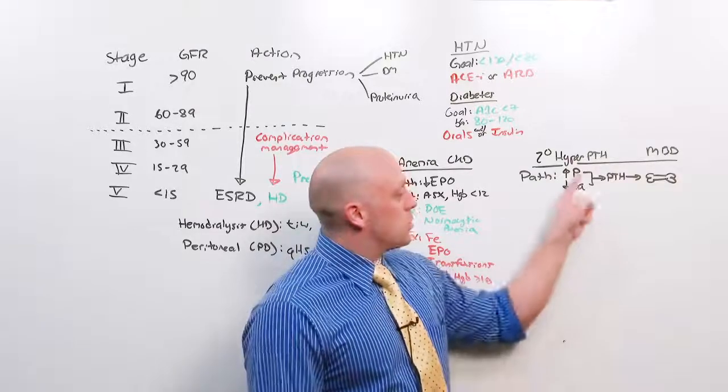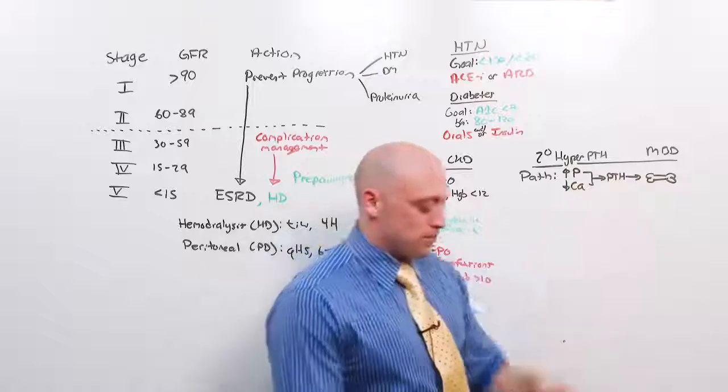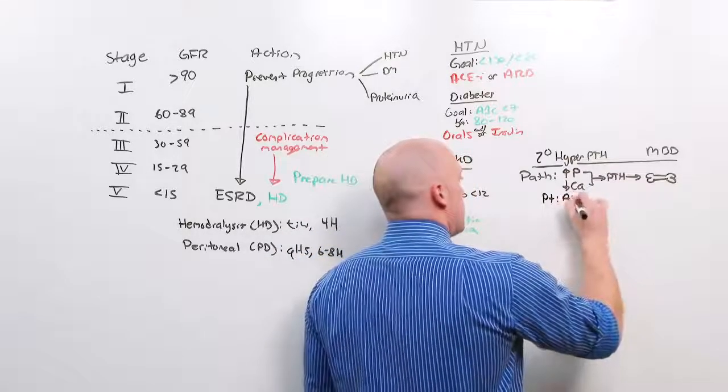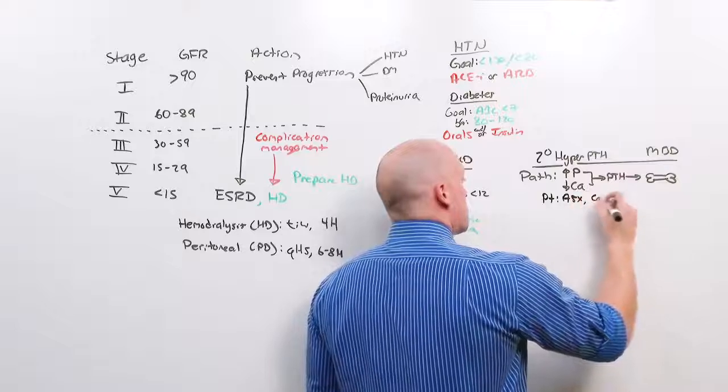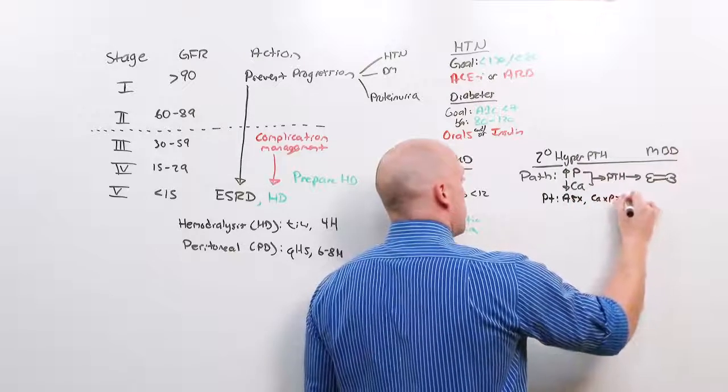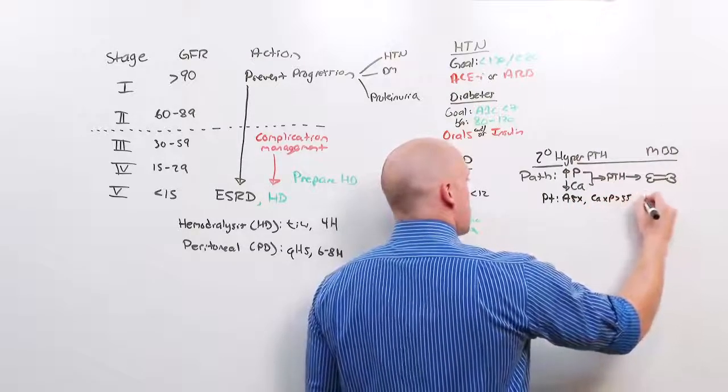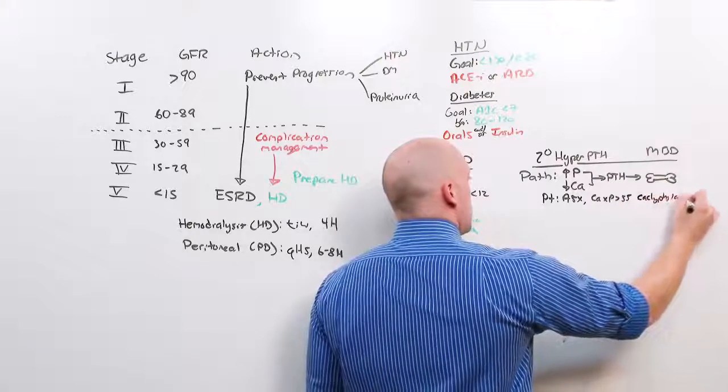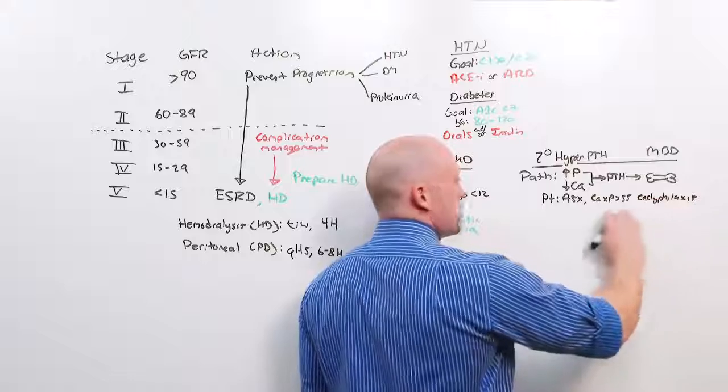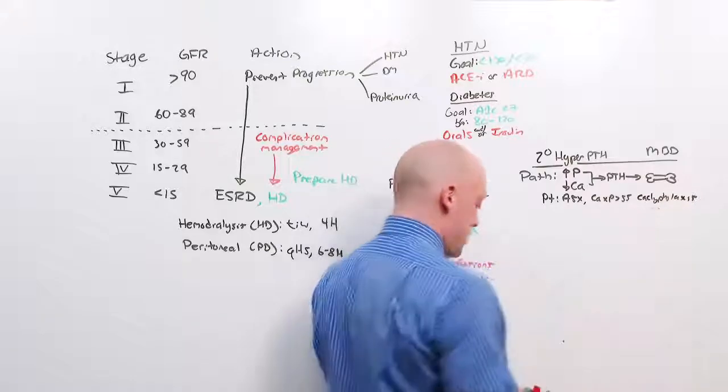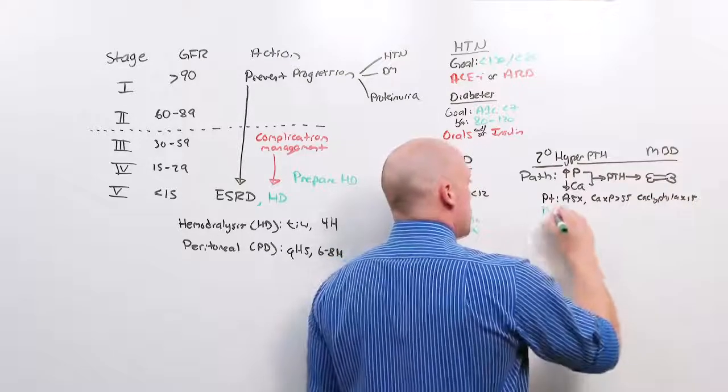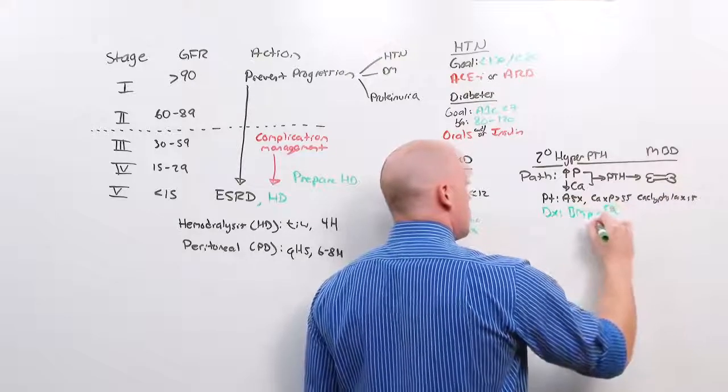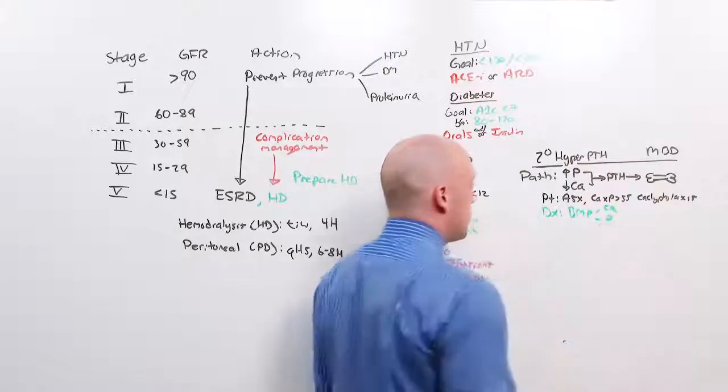So too much phosphorus, too little calcium, too much parathyroid hormone. The patient is going to present asymptomatic. If the calcium phos product is greater than 55, they're at risk for calciphylaxis, ulcerations of the skin, but generally that doesn't happen because we're checking BMPs. The diagnosis is made simply by checking labs. A calcium and a phosphorus.